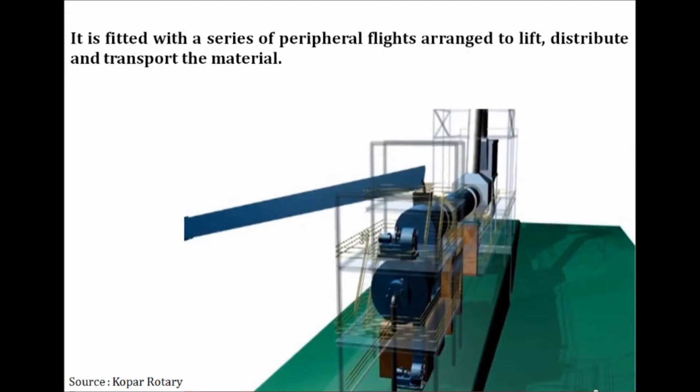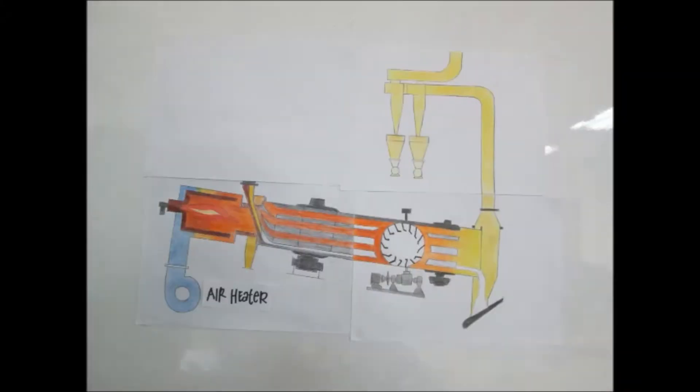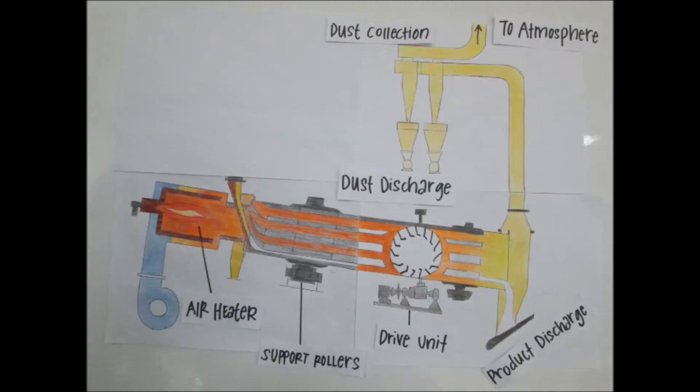It is fitted with a series of peripheral flights arranged to lift, distribute, and transport the material. Next, we will proceed to the working principle of the rotary dryer. These are the important components of a rotary dryer.